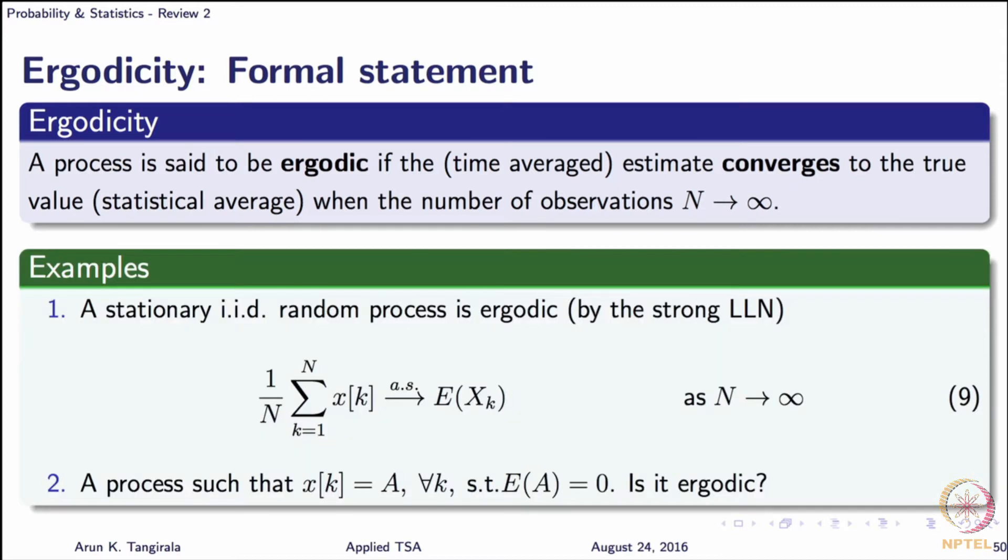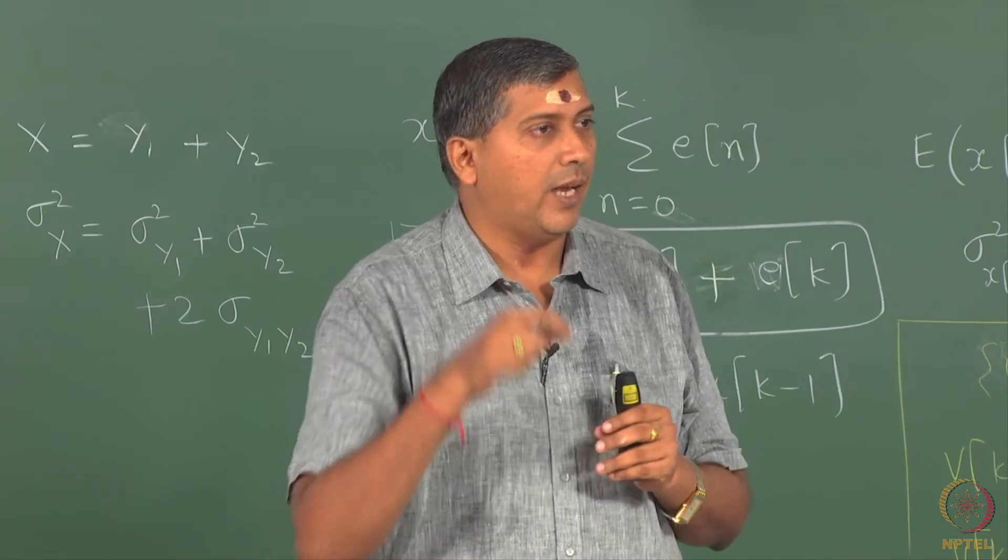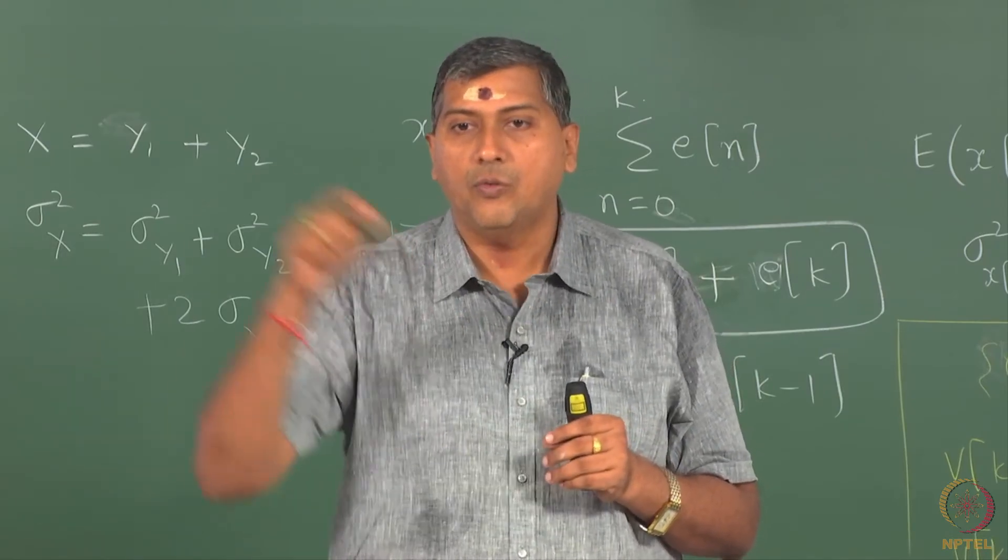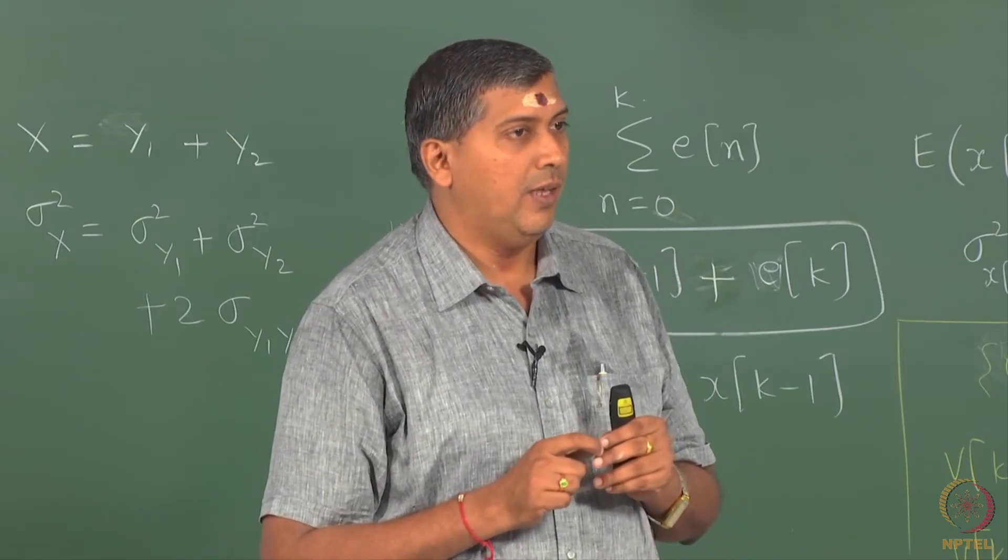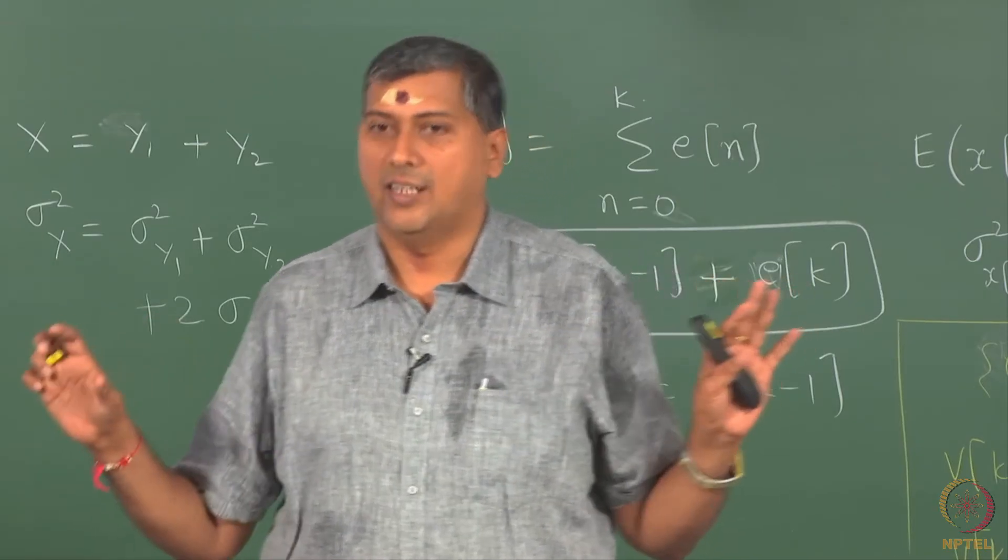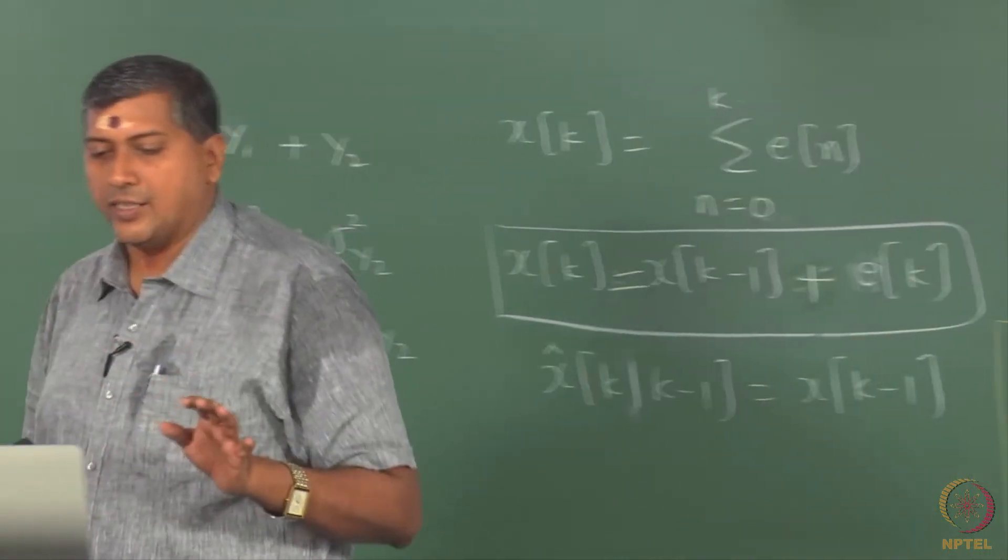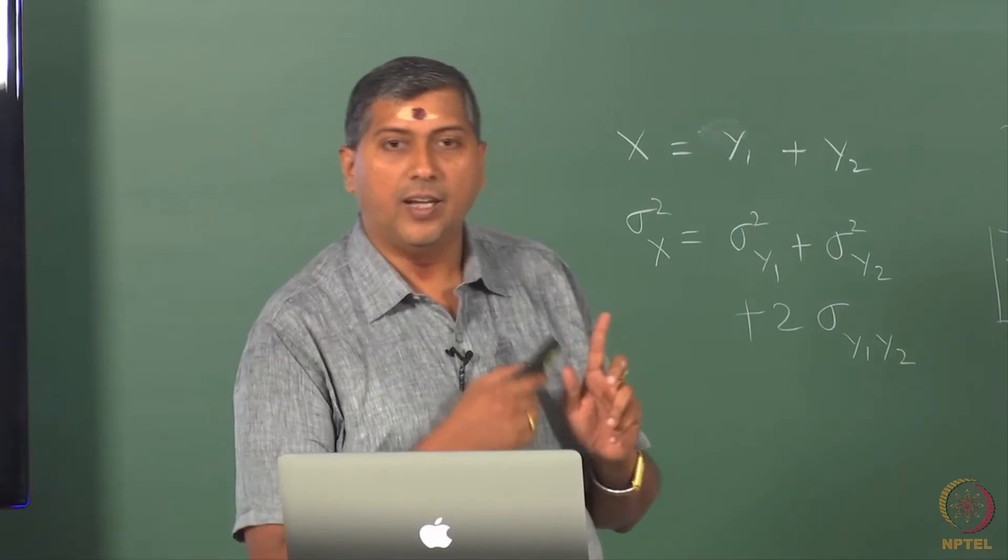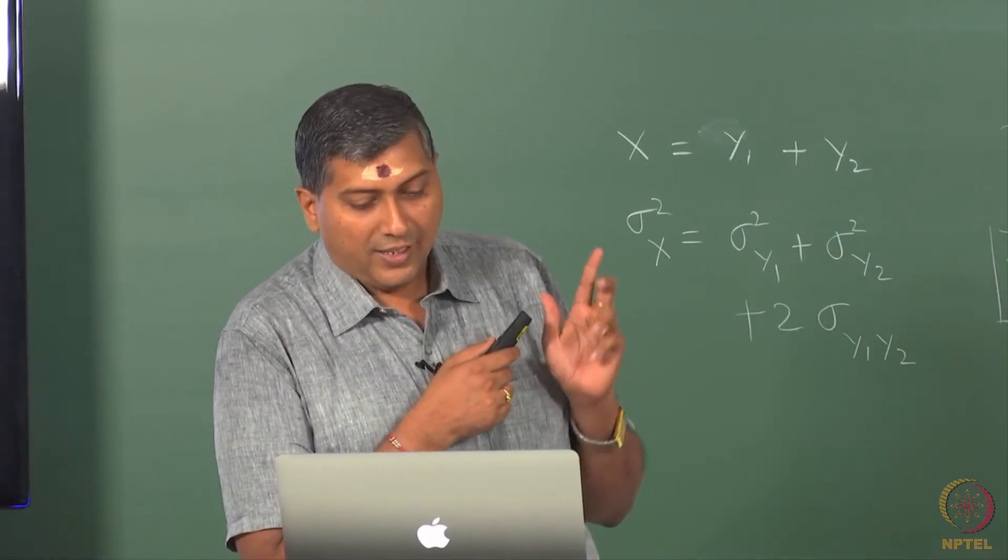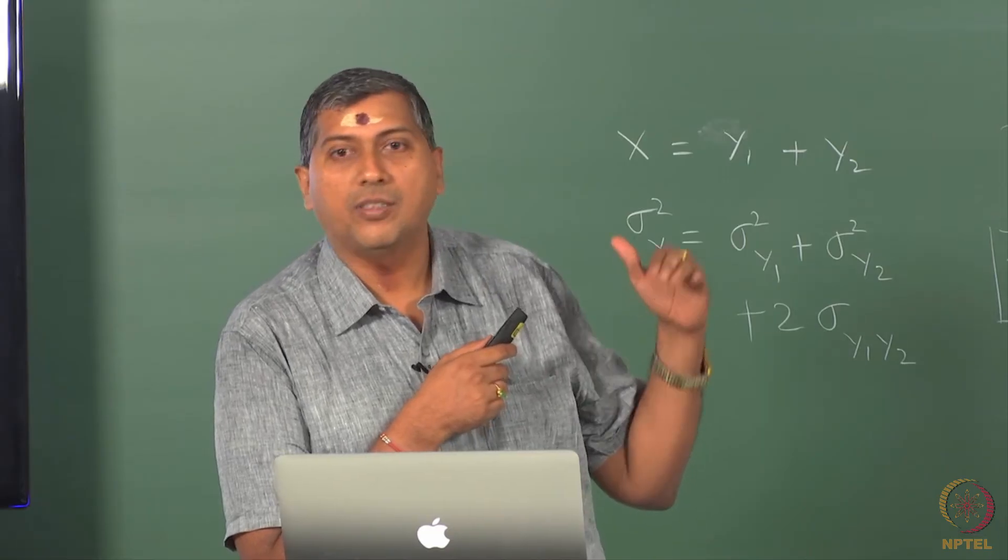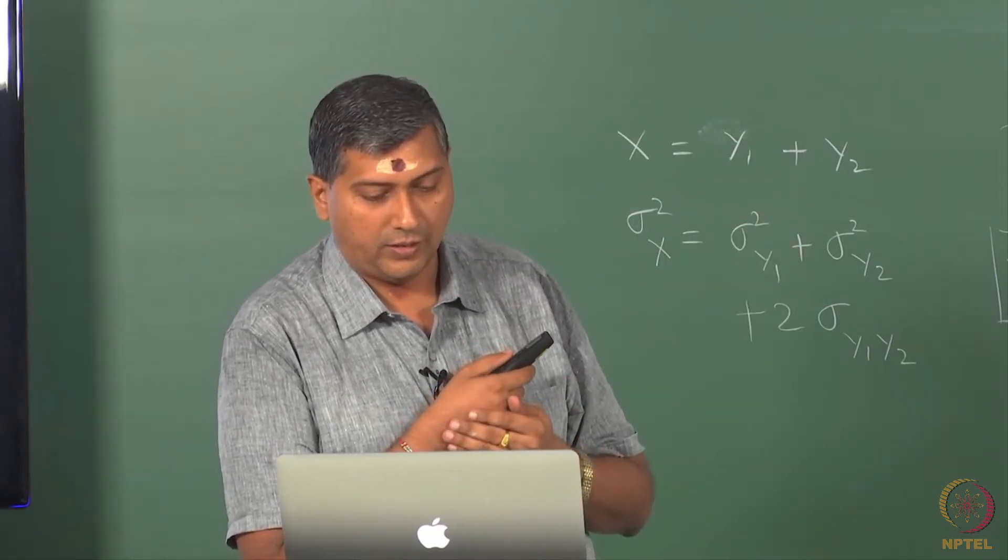For example, if you take an IID process - what is an IID process? Independent and identically distributed process. Independence talks about the correlation structure of the process in time and identical tells us that each observation falls out of the same probability distribution. Such a process is called IID, it is an idealization that is not realizable. The diluted version of IID process is white noise.